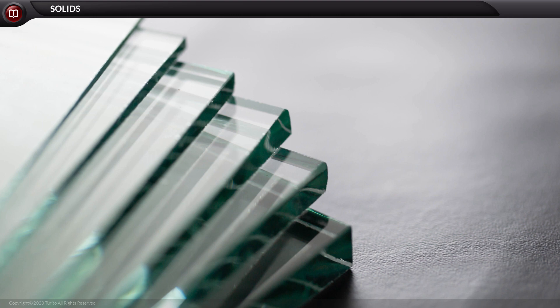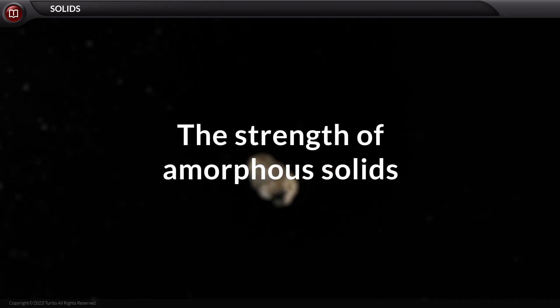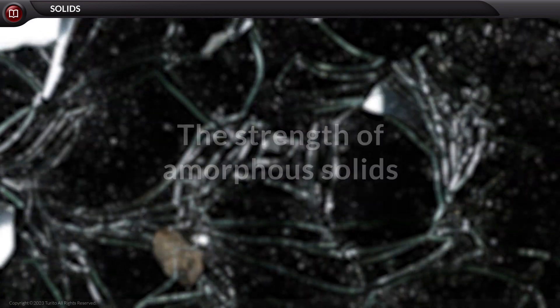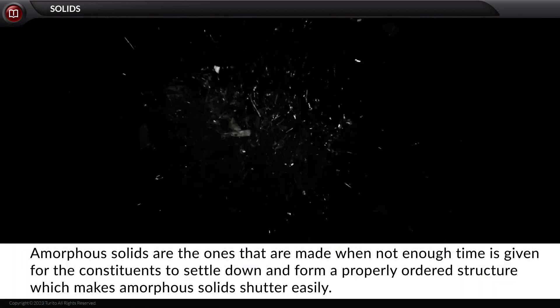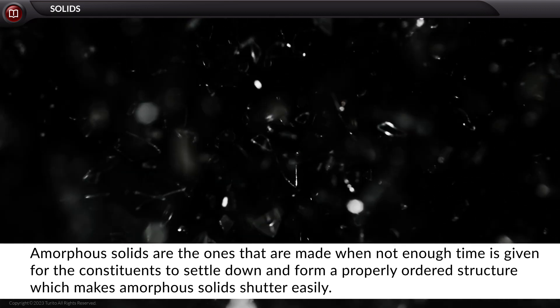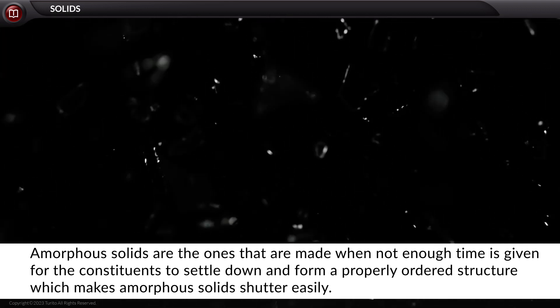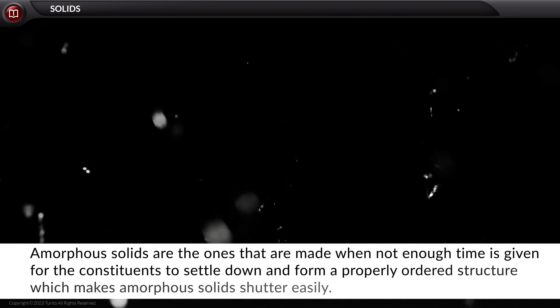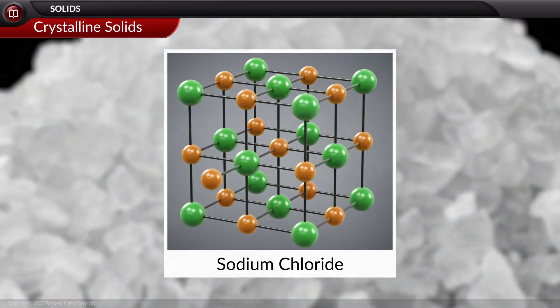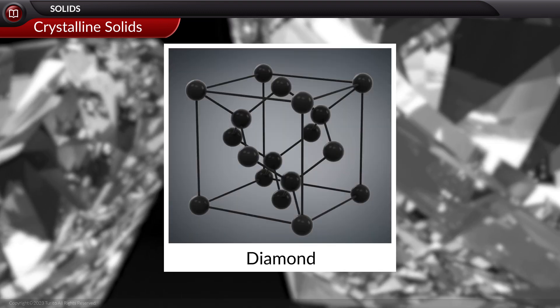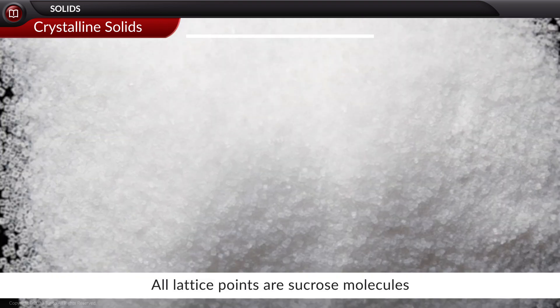The next thing we have to see is the strength of amorphous solids. Amorphous solids are the ones that are made when not enough time is given for the constituents to settle down and form a properly ordered structure, which makes amorphous solids shatter easily. Next is the crystalline solid, which we encounter most in our daily life. Examples are sodium chloride, diamonds, sugar, and so forth.